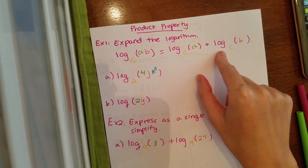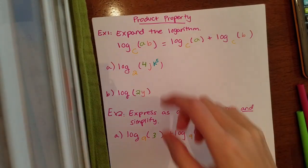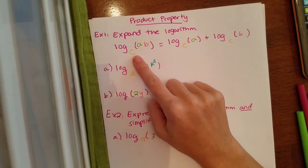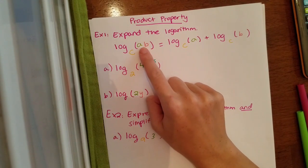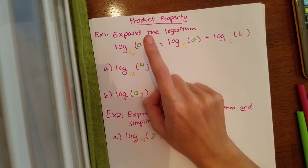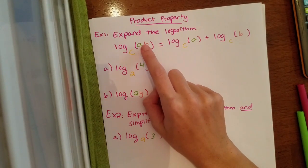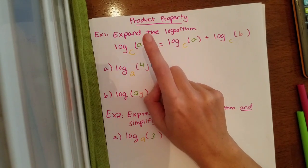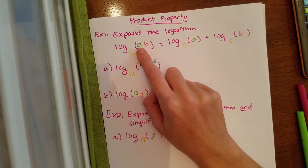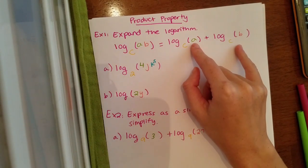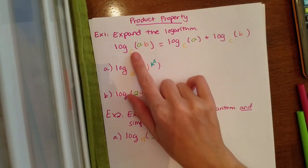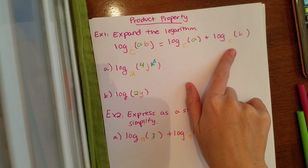So the product property states that if you have a log and you are multiplying inside of the logarithm—this is not a log times a log, it's a log of a times b—so there's multiplying going on within the log. If you see that, you can separate each piece of the multiplication into separate logs. And again, if you notice, you have to use the same base when you do this.